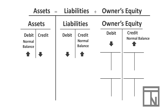You may have noticed that there are four other categories built into owner's equity. That's because owner's equity has four main components: two of them increase owner's equity and two of them decrease owner's equity.